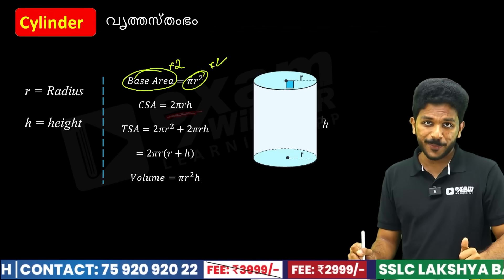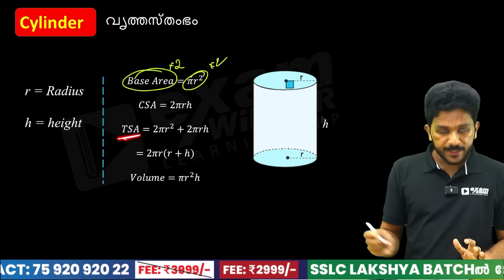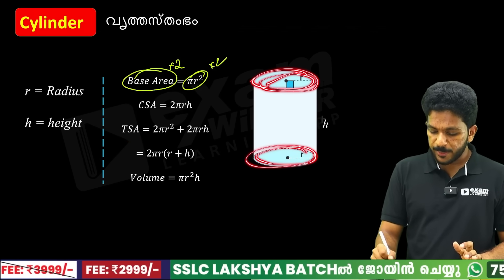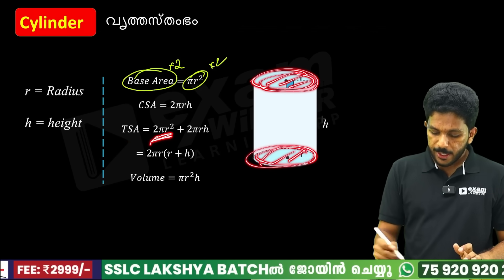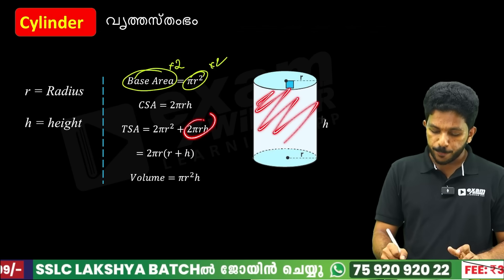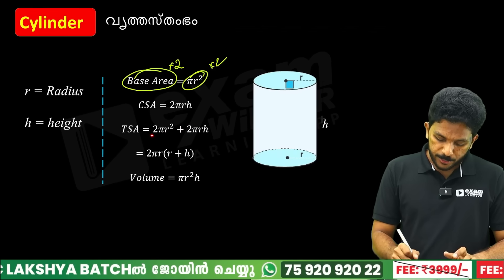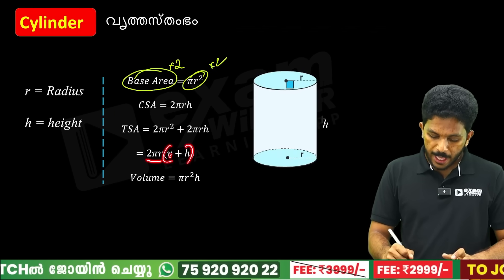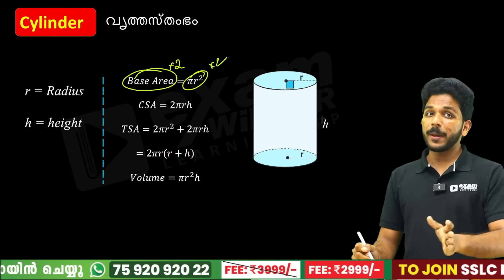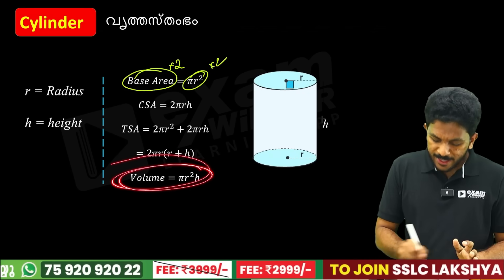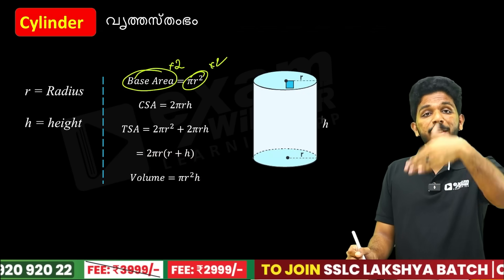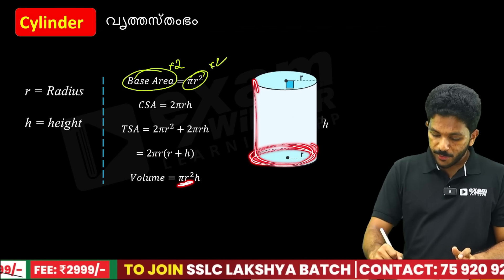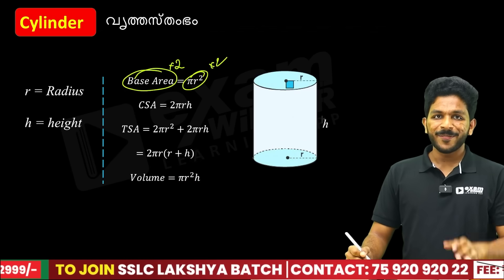TSA = 2πR(R + H). The volume is base area times height: πR²H.